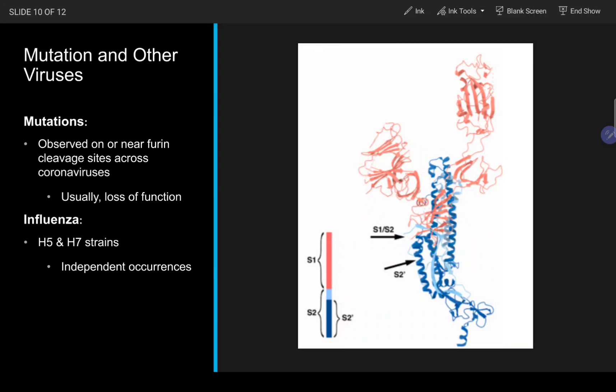The author also provides examples of the distinct H5 and H7 influenza viruses, which have also been observed to independently develop furin cleavage sites on their surface proteins.